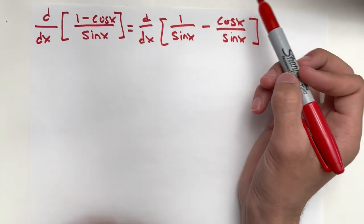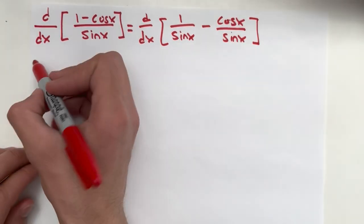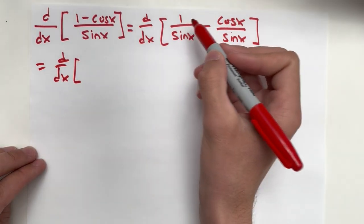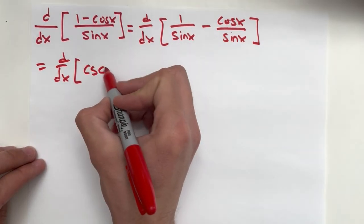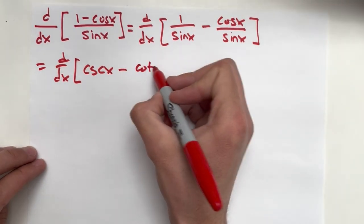So this is kind of cool because we can see here, if we know our trig, that this actually all simplifies out to some really cool stuff. So d/dx, 1 over sine x, well that's simply cosecant x minus cosine x over sine x. That's cotangent x.